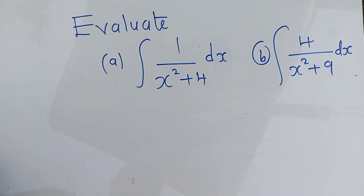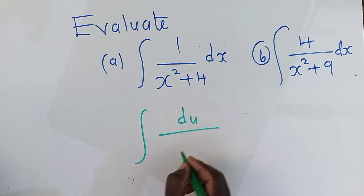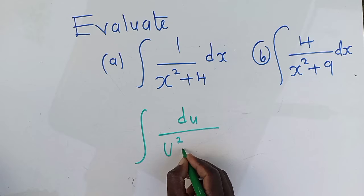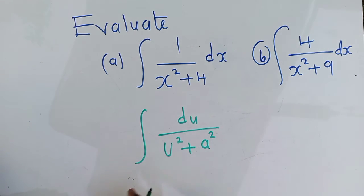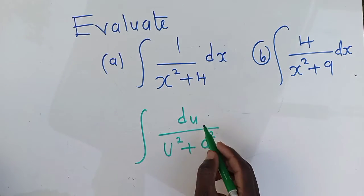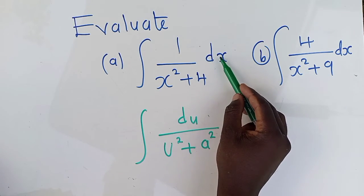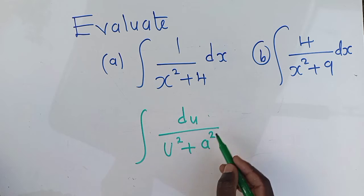There is a formula that needs to be used. So, the formula looks like this: integral du over u squared plus a squared. So, when you've got something like this, if you can see, this du is the same as dx. It can come here or here, it won't change anything.